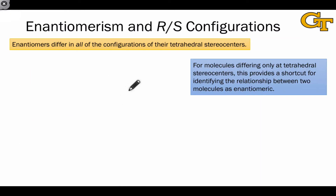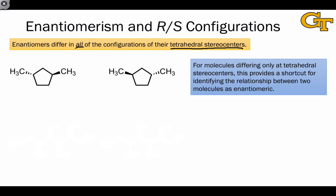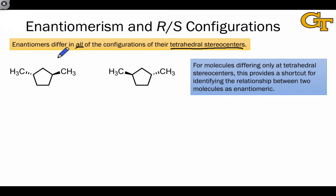As we saw for diastereomerism, there is a shortcut to identify an enantiomeric relationship between molecules containing only tetrahedral stereocenters. This is based on the idea that enantiomers differ in all of the configurations of their tetrahedral stereocenters. To understand why this works, I want to return to the point that reflection through a mirror inverts or changes the configuration at a tetrahedral stereocenter.